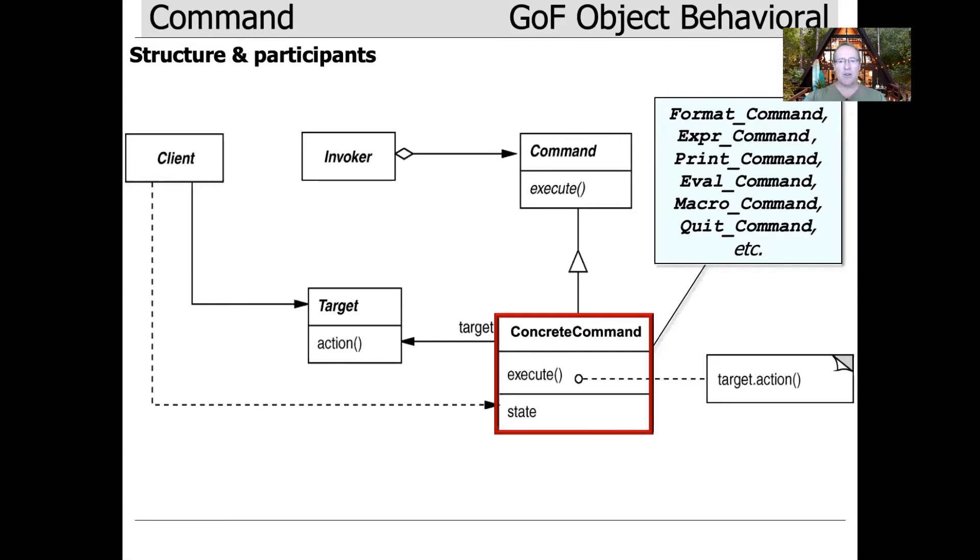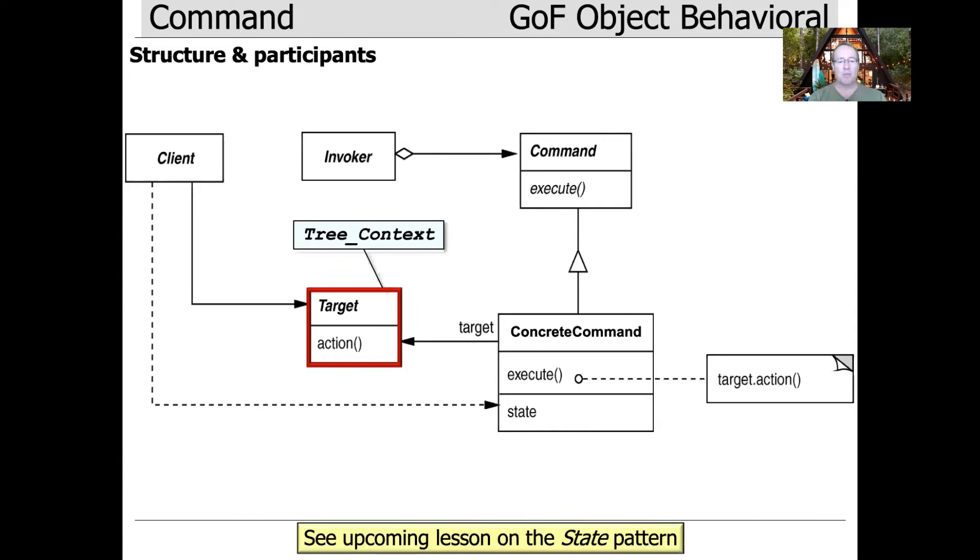As you can see, that's either done by execute or it forwards to some target. If it forwards to a target, then the target is what actually does the work. We'll see in our example, when we look at the state pattern later, that the tree context is the part that's actually the target for commands.